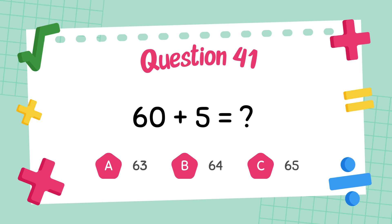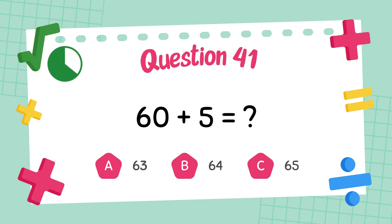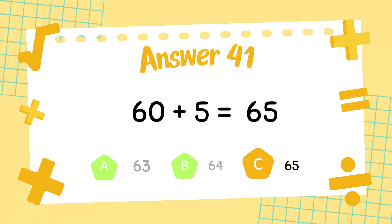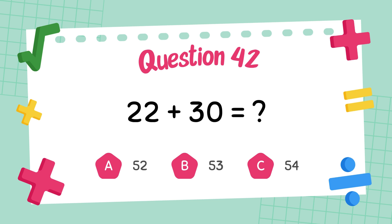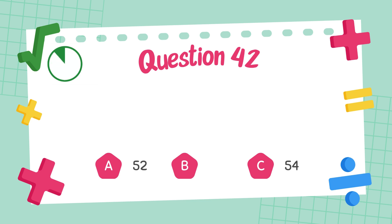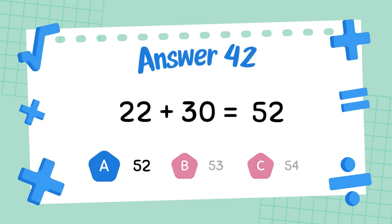What is 60 plus 5? The answer is 65. What is 22 plus 30? The answer is 52.